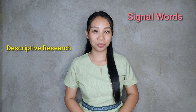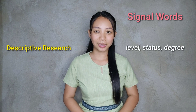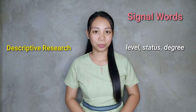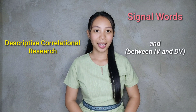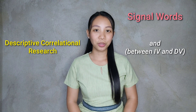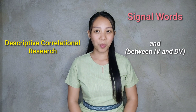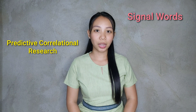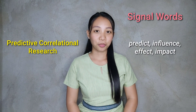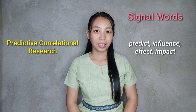First, we have descriptive research — the key signal words are level, status, and degree. Second is descriptive correlational — the signal word is 'and,' used between the independent variable and dependent variable. Third is predictive correlational — the signal words are predict, influence, effect, and impact.